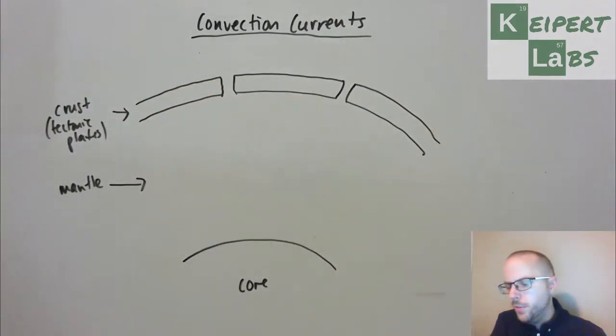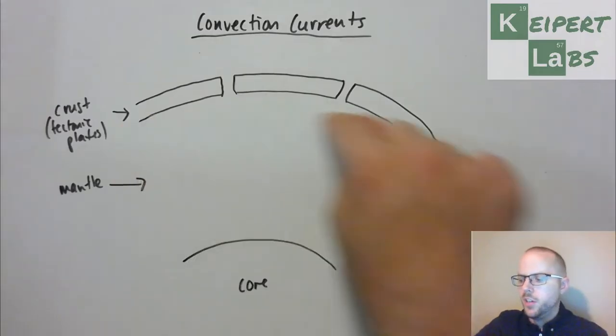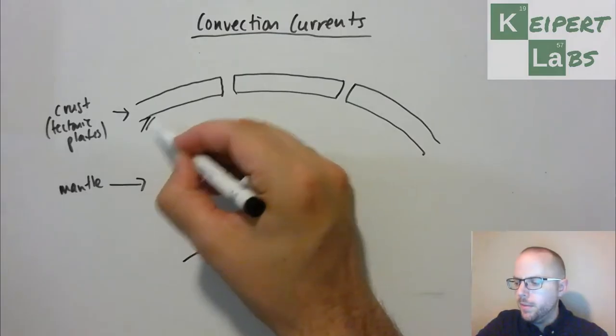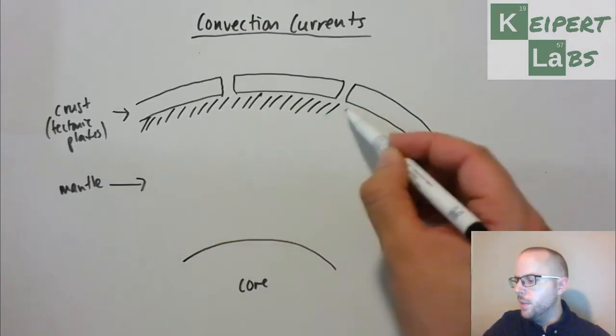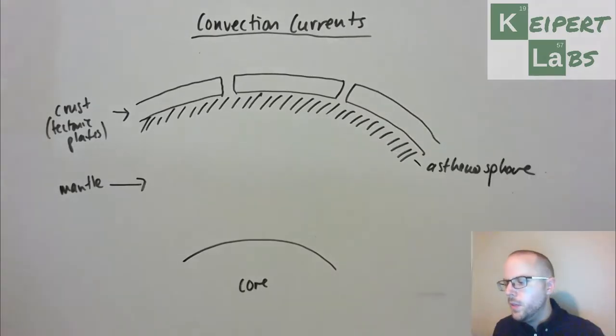Now it's a bit simplified, because I know we've talked about the upper mantle and the lower mantle before, and talked about the asthenosphere. The asthenosphere, which is up top here, is what's actually making contact with the tectonic plates.